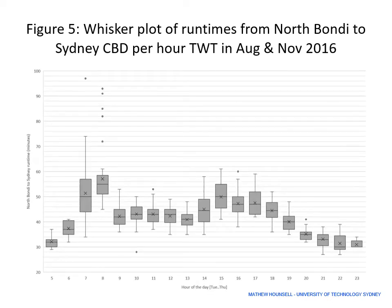Breaking the data down further, a whisker plot for each hour of the day — with hour on the horizontal axis and run time on the vertical axis — allows us to identify which hours are most problematic. The 7 to 8am period has the worst range and worst interquartile range, while 8 to 9am is more skewed towards slower services. The 3pm period is also an incredibly bad time for inbound services on this route.